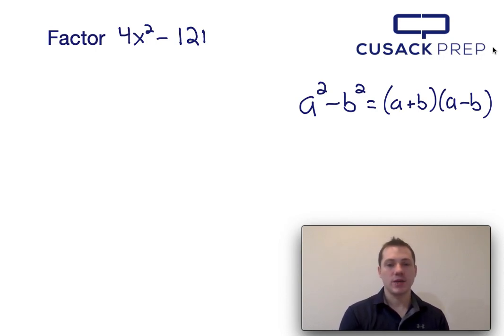Now the first thing I notice about 4x squared and 121 is they're both perfect squares. Since we have two perfect squares that are being subtracted from one another, I know that this can be factored using the difference of squares formula, which I presented over here on the right hand side.